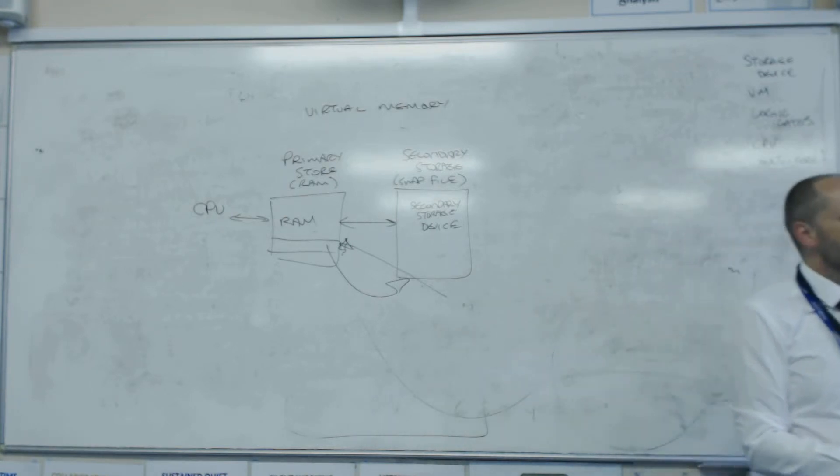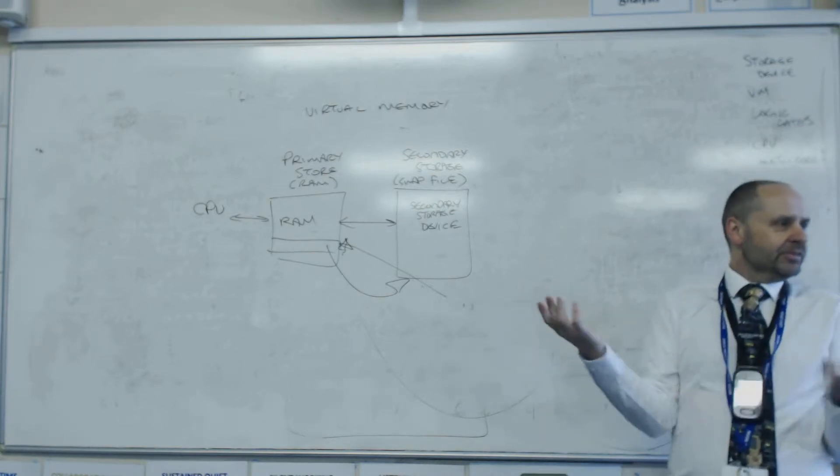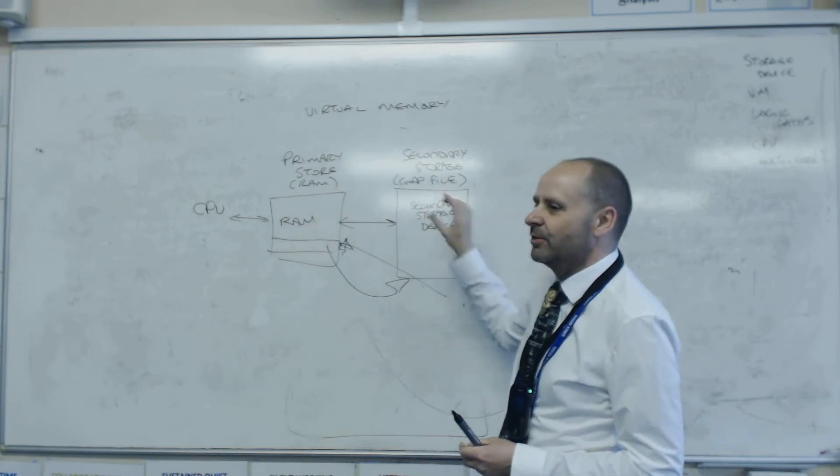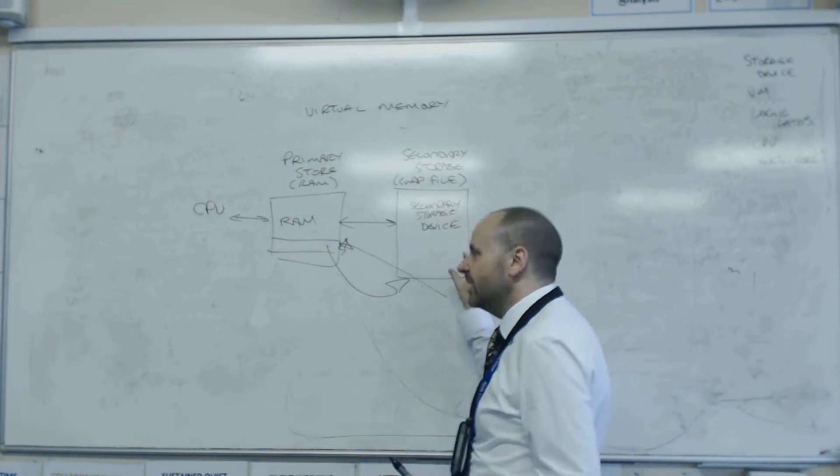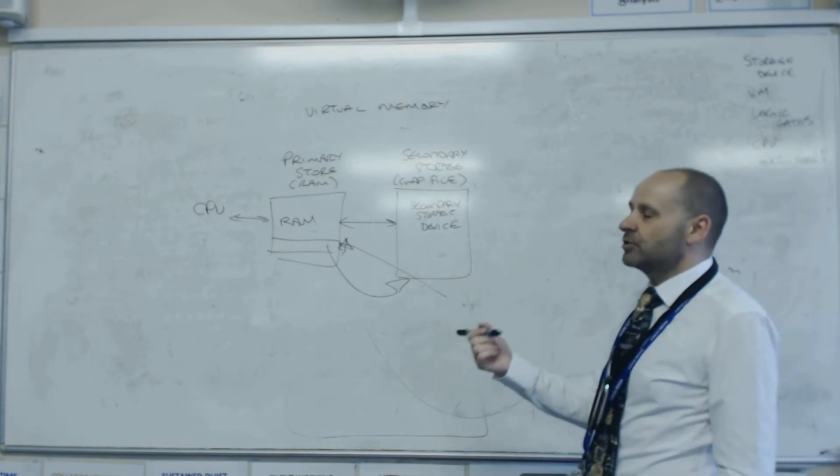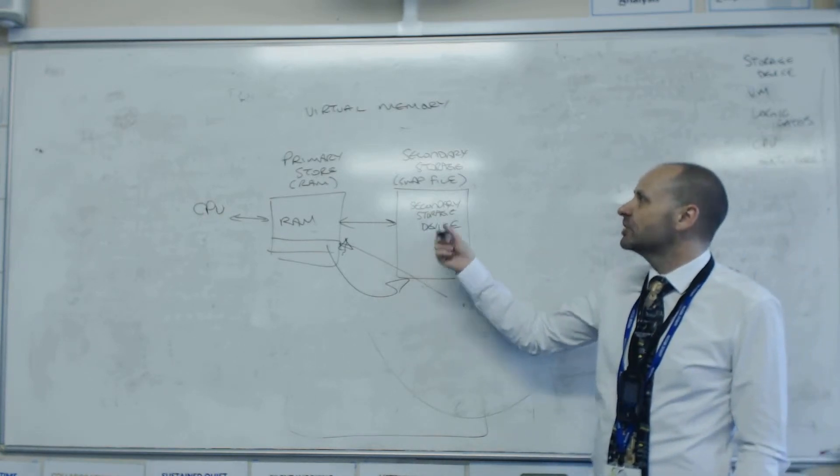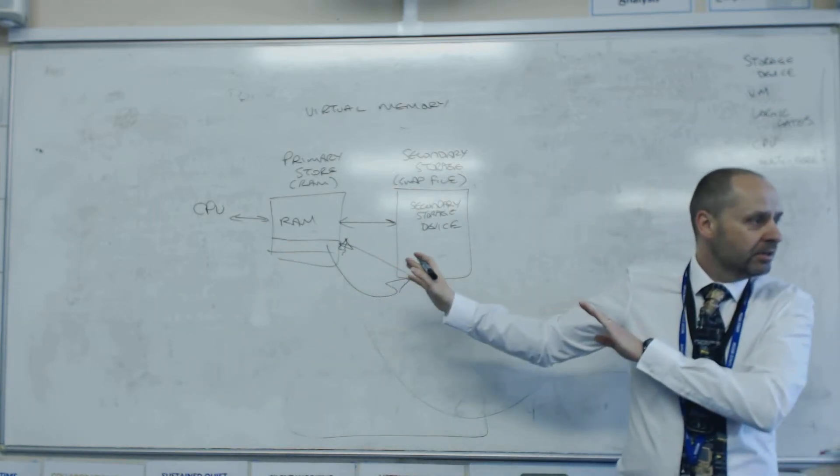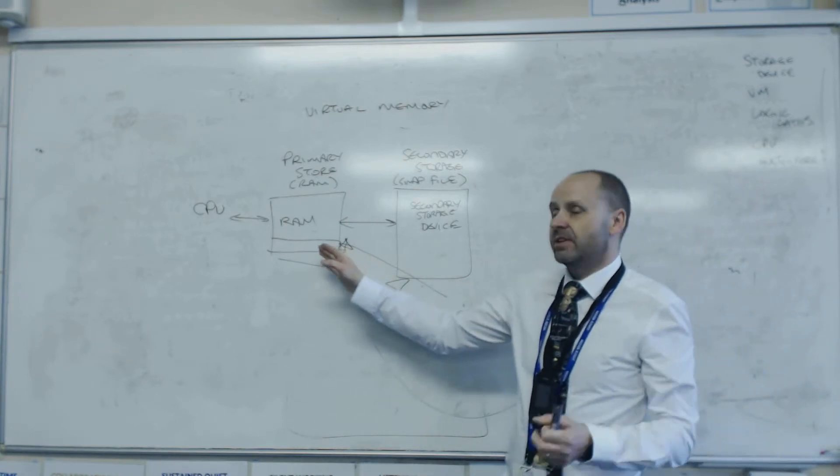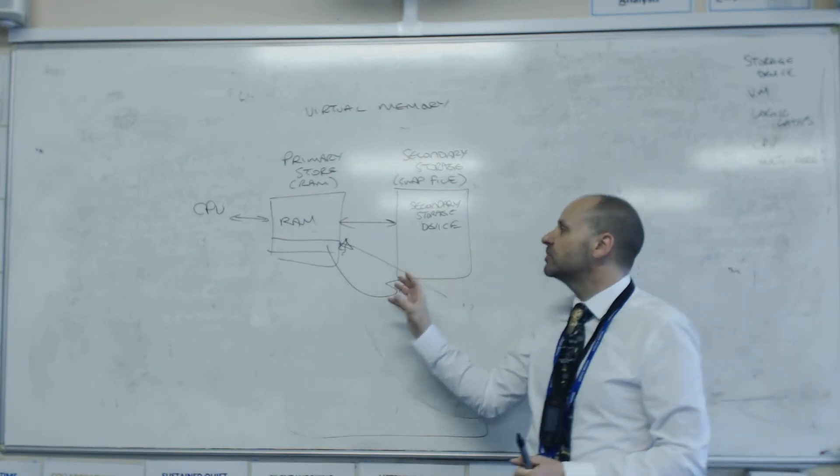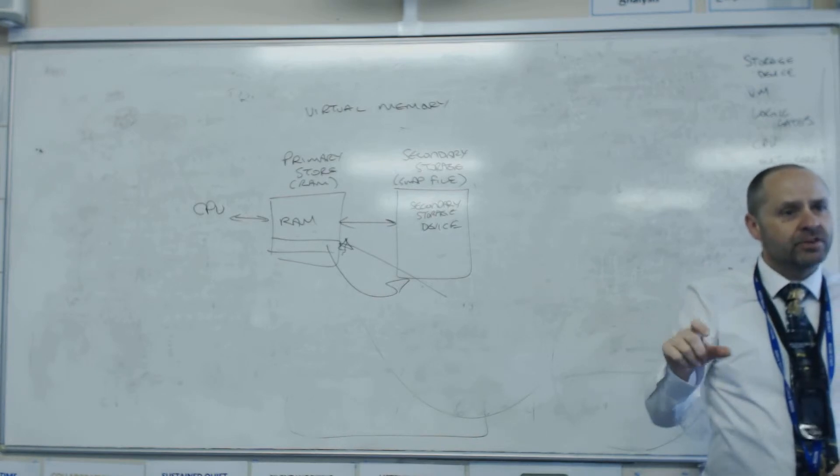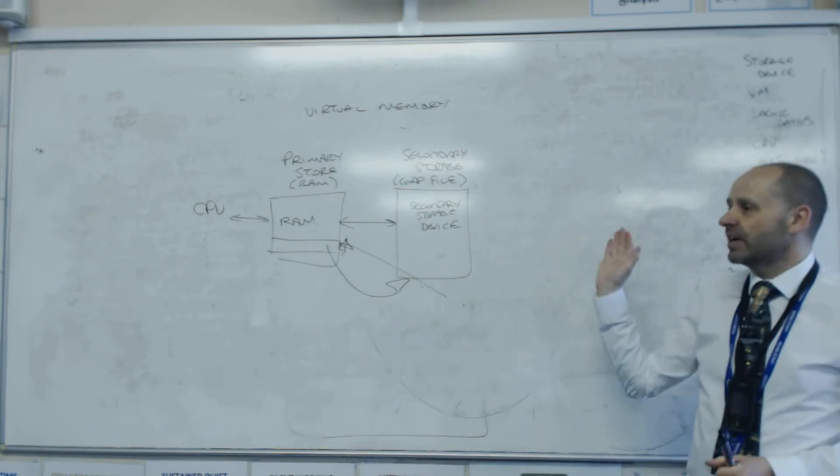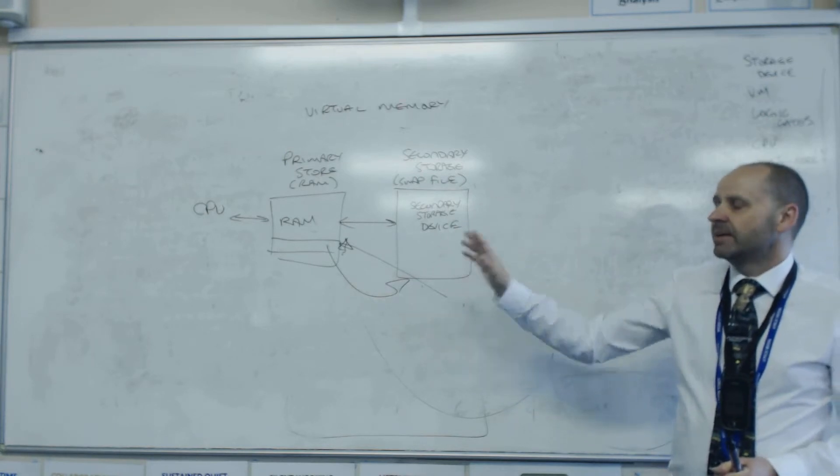Now it's not as simple as that, because all the programs we're trying to run want the CPU to access them. So what we tend to find happens is there is a continual process of saying 'this isn't being used, save it in the swap file, we want to use this, take it from the swap file and load it into RAM.' So there is a two-stage process. So if there is a program that is in the swap file that we need to access, first we copy it into main memory, then we can execute. When we finish with it temporarily, we can put it back in the swap file and make space. So it's all about making space. The process of using virtual memory, there is a cost, and the cost is the time it takes to transfer data to and from the secondary storage device and main memory.